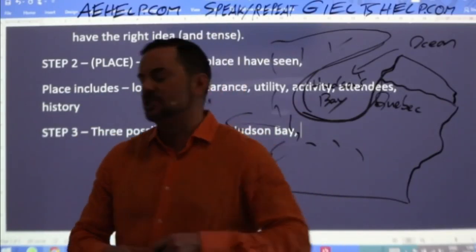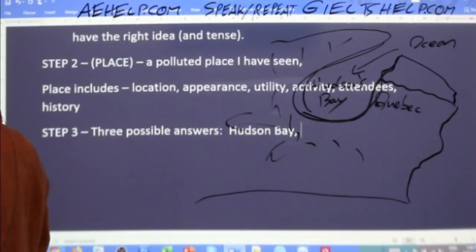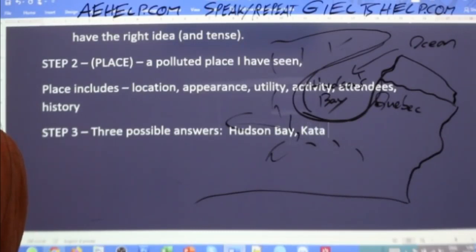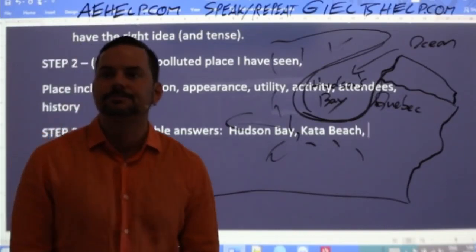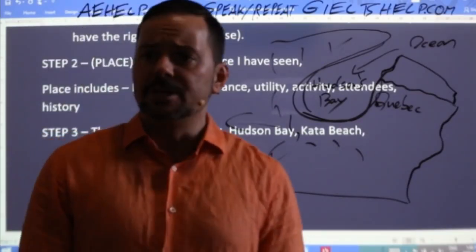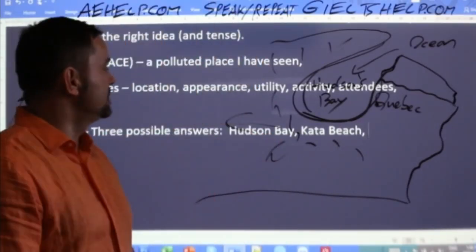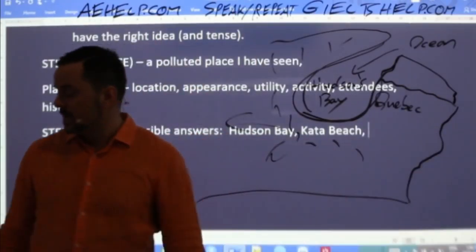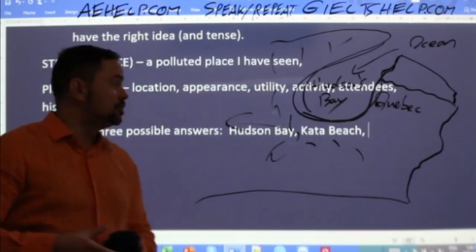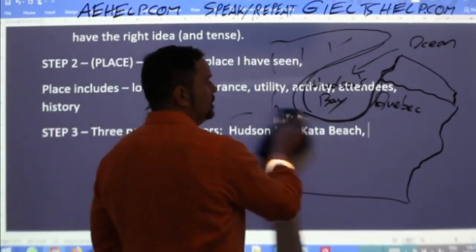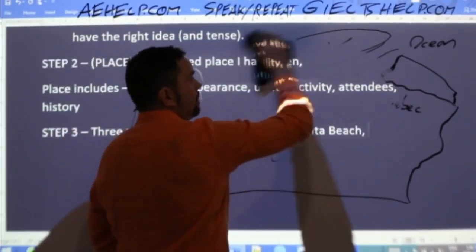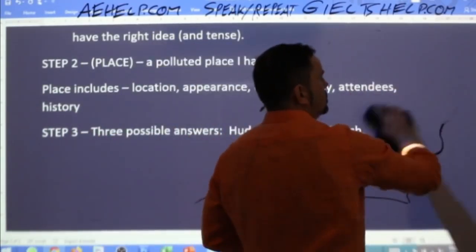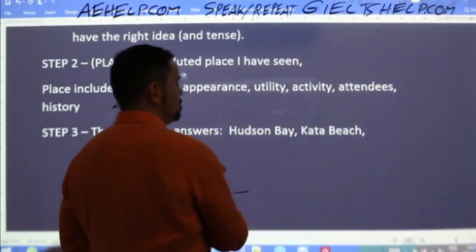Ferdavs says Kata Beach in Thailand — sure, a beach. We're just giving it names; it could be any name. So we have Hudson Bay and Kata Beach. A beach is any shoreline along the ocean, a lake, or even a river. So a polluted beach, a polluted bay — what else?